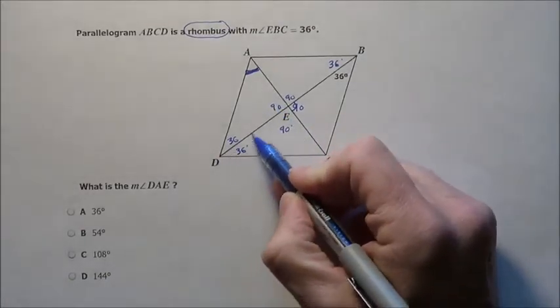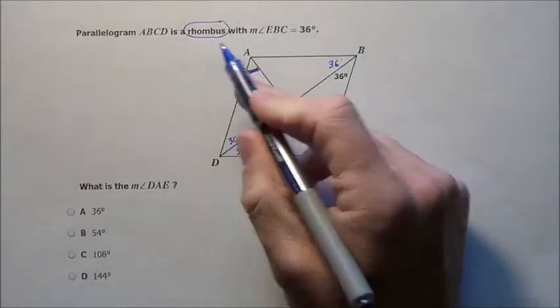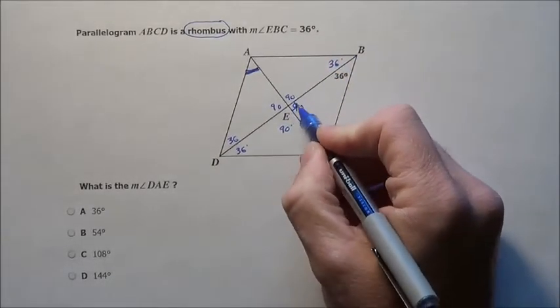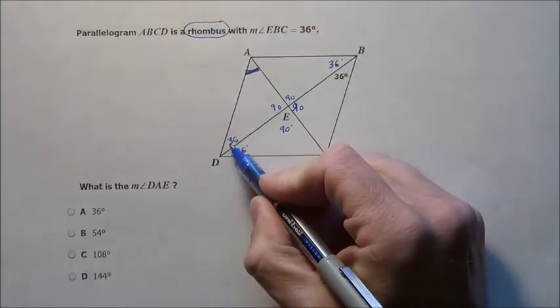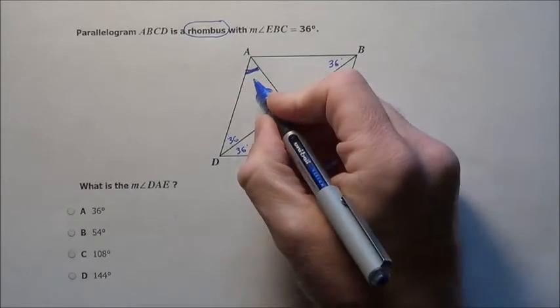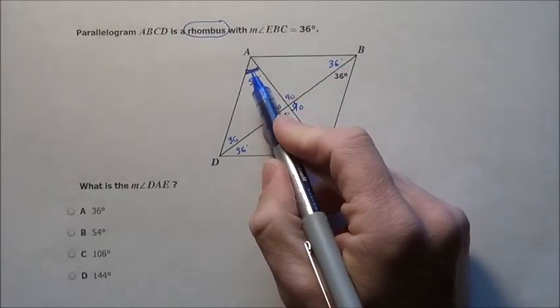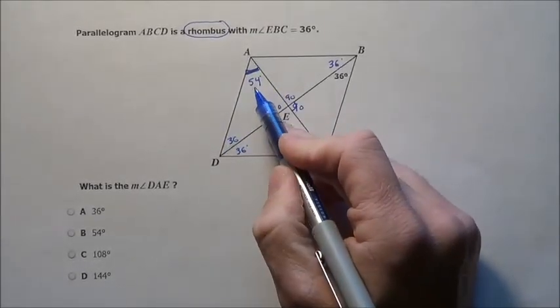Well, now I can easily find what I need. Again, it's knowing the special bits of a rhombus. It bisects the angles and the diagonals intersect perpendicular to one another. So now that I have 90 and 36, that adds up to 126. 126 and 54 degrees will make a triangle here of 180 degrees. So it's 54,